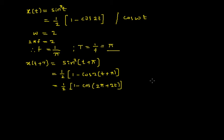And by making use of the trigonometric result, I already know that cos(2π + θ) = cos θ.